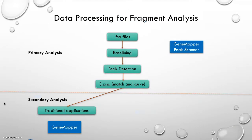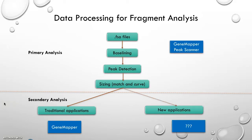There are multiple steps of data processing for traditional fragment analysis. The supplier software GeneMapper and PeakScanner can provide primary analysis, starting from FSA file, including the steps of baselining, peak detection and sizing. GeneMapper can provide secondary analysis for some traditional applications. There are also several alternative softwares available for traditional applications. However, there are no automatic tools available for the new applications.